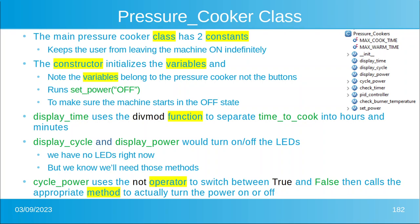Display cycle and display power would turn on and off different LEDs on the front of the pot. Of course, there is no pot we have right now, therefore we don't have any LEDs, but we know we're going to need those methods. Those methods would be given to us by the hardware manufacturer, whatever hardware manufacturer we're using. Cycle power uses the NOT operator to switch between true and false and then calls the appropriate method to actually turn the power on or off. So that's an example of the NOT operator.